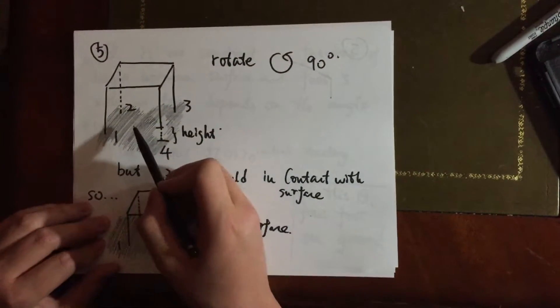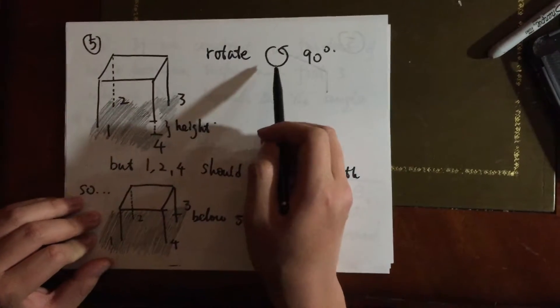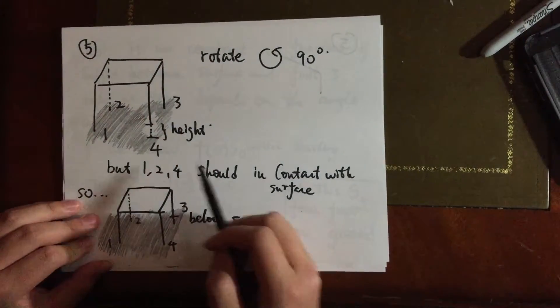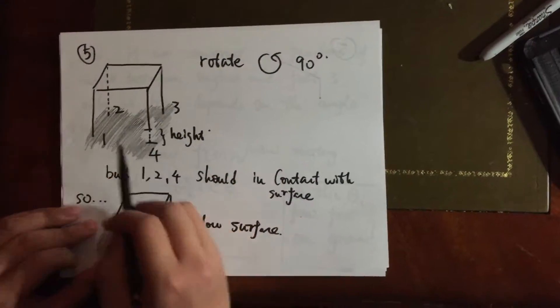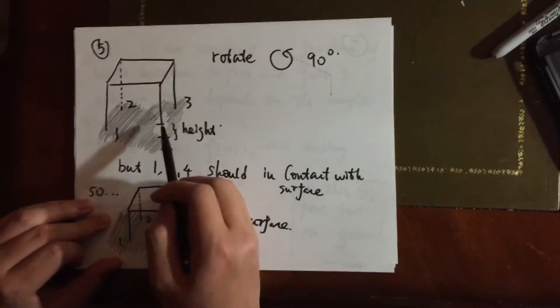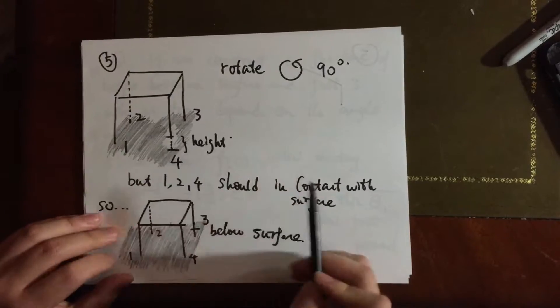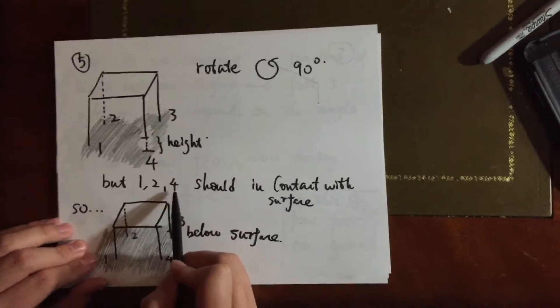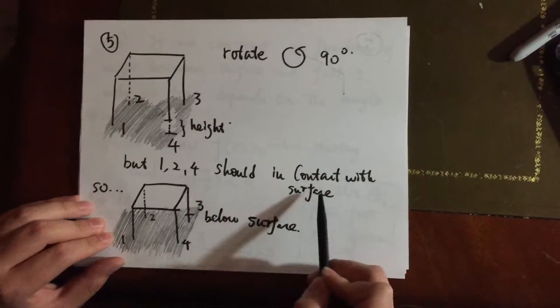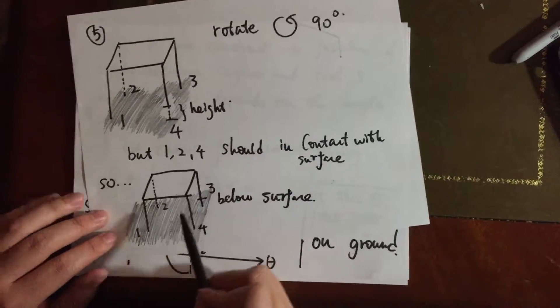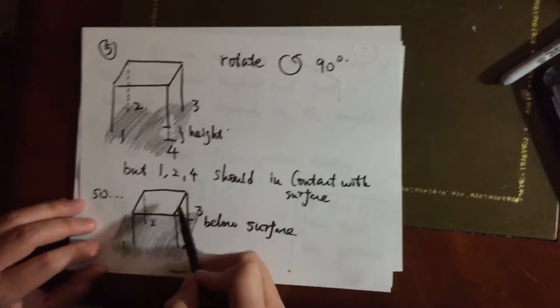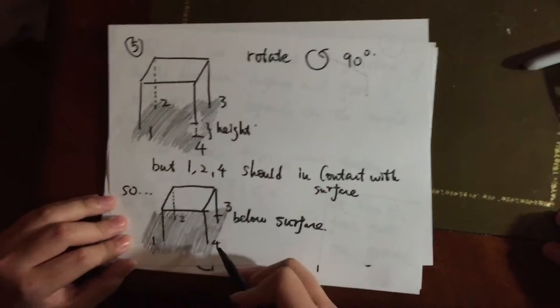So in order to solve this, we still rotate counter-clockwise 90 degrees, where as it shows, now the fourth foot rotate to the position where it has a height between the tip of the fourth foot and the surface. But we want 1, 2, 4 should be in contact with the surface, so in order to solve this,